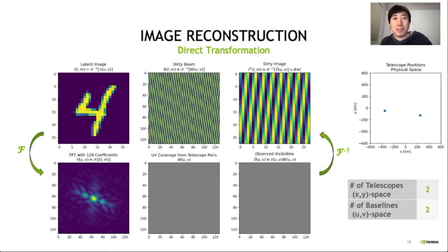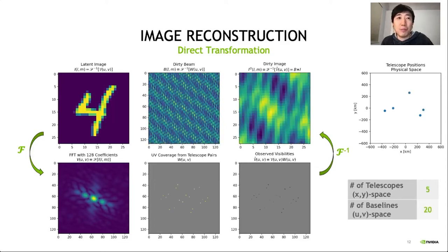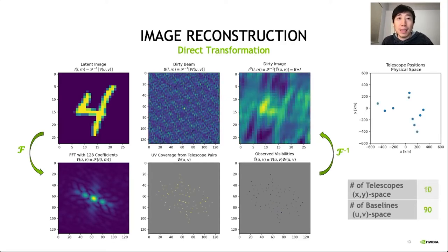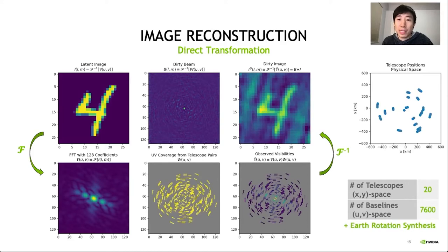This one's pretty bad with only two telescopes. However, if we continue adding more telescopes and use the rotation of the Earth, we can greatly increase the number of baselines. We can finally recognize the reconstruction as our original source image.